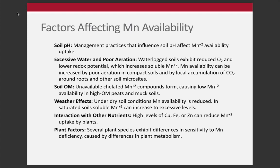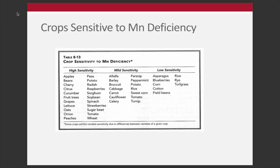Manganese availability is going to be driven strongly by pH — high pH means low availability. We also think about manganese with excessive water and poor drainage. These oxidation-reduction reactions occur when soils turn anoxic or there's excessive water and poor aeration — low redox potential. On high organic matter soils with high pH, we can see manganese deficiencies. Other factors include weather, interaction with other nutrients, and plant factors. Crops sensitive to manganese deficiency — high, mild, and low sensitivity — are listed here.